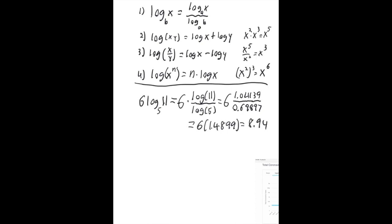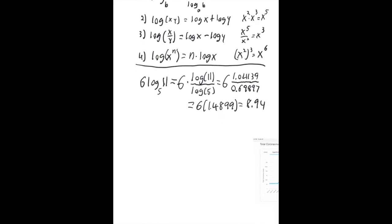And then that comes out to be 6 times about 1.4899 when you do the division, and that's about 8.94. Generally speaking, Hawks will want you to write answers when you're doing decimal approximations to two decimal places. They'll tell you that in the instructions. So that's using formula 1, the first one there.